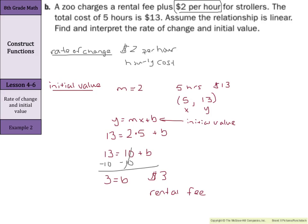So on this problem, we are given the rate of change of $2 per hour, so that's our hourly cost. Then we said that hourly cost is going to be our m. We created an ordered pair with the 5 hours, $13. We substituted those into slope intercept form in order to solve for our b, since our b is our initial value. Once you solve, you have your rental fee, you have your hourly cost.